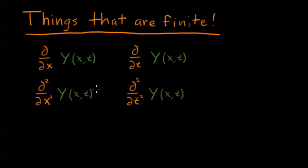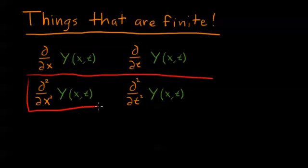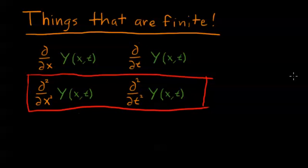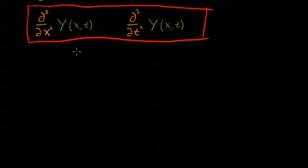So what can we do with these things? If you can take a second derivative of a function, you can always take the first derivative, since you have to take a first derivative before you can even get to the second derivative. So the second derivatives contain the same information and more than the first derivatives. We'll concentrate on these two second derivative requirements because they hold all the information. Let's see if we can find some way to argue that they're related to each other, because if they were, we could possibly come up with an equation that our wave function would have to satisfy to be a real wave.